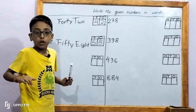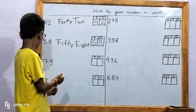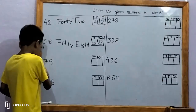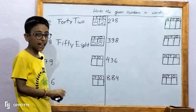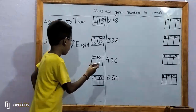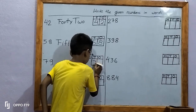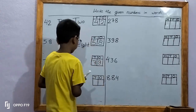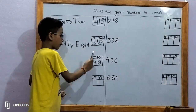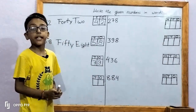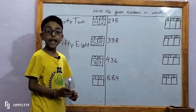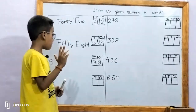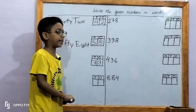Let's move on to the third number. In the third number, there was given seven, nine — that is 79. Let's write in place. Nine is in one's place; nine ones means nine. Seven is in ten's place; seven tens means seventy. It makes the number seventy-nine.